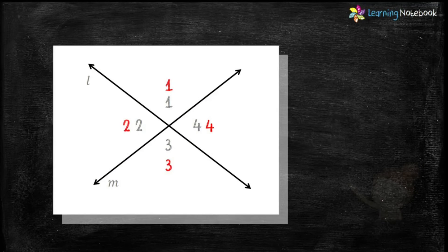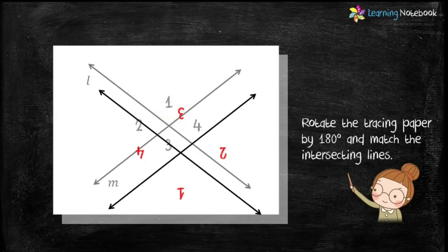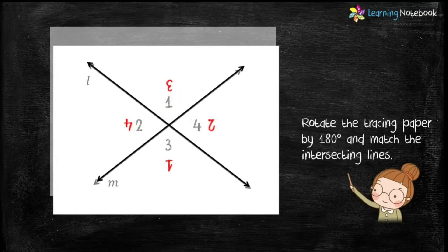Now, let's rotate the tracing paper by 180 degrees and match the intersecting lines as shown here.